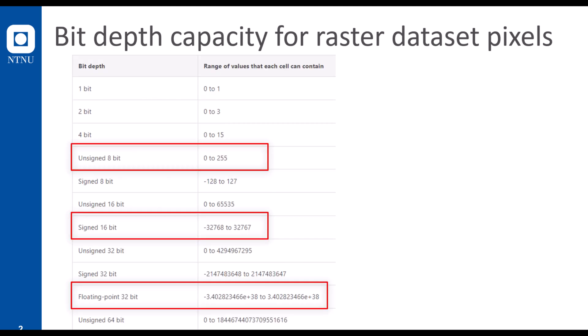This is also often called the bit depth or the pixel depth capacity for raster data sets. I will shortly talk about three of these kinds: the unsigned 8-bit, the signed 16-bit, and the floating 32-bit.